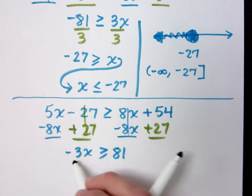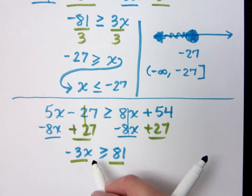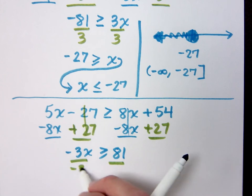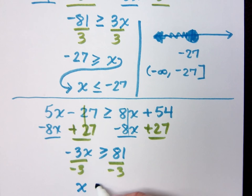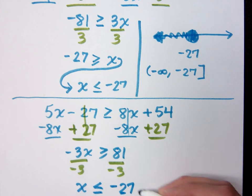Similar numbers that I had above, right? However, what do I have to divide both sides by? Negative 3. I have to divide both sides by negative 3. And that will change the direction of my inequality to make it what? Less than or equal to negative 27. And that's the same thing that I already had.